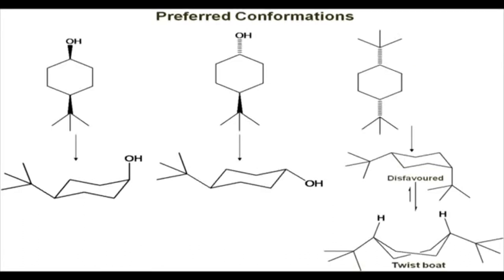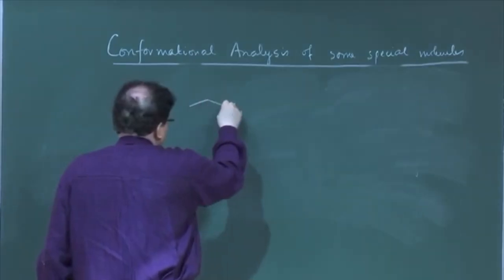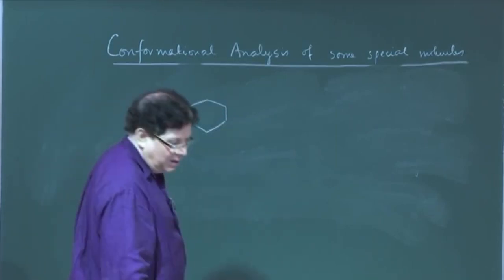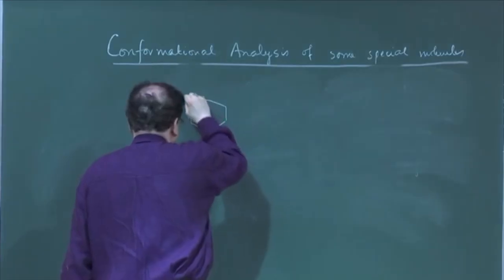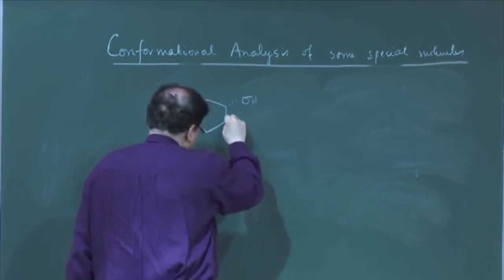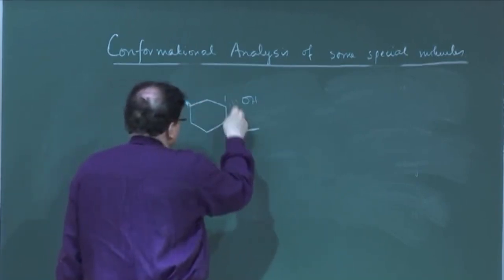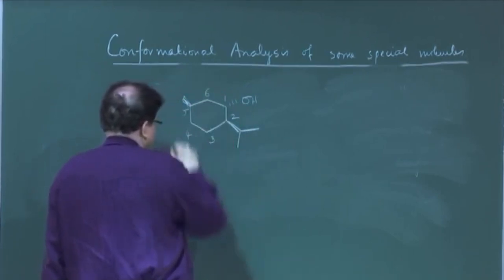There is another molecule I can show you — the tert-butyl group acts as a locking group for the preferred conformation. This molecule is also called neomenthal. Let us do this problem: how to draw the preferred conformation of this molecule. Looking at the molecule: methyl is beta, there is a hydroxyl alpha, and there is an isopropyl at the beta position. Suppose this is carbon 1, this is 2, 3, 4, 5, 6.